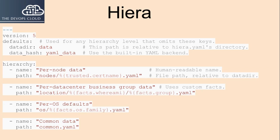Name is a unique name for this level, shown in debug messages and explain output. Path, paths, glob, globs, or mapped_paths — choose one — specifies the data files to use for this hierarchy level. These paths are relative to the data_dir, they support variable interpolation, and they require a file extension. data_hash specifies which backend to use and can be omitted if you set a default.